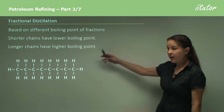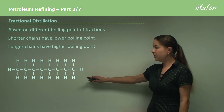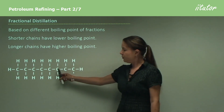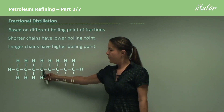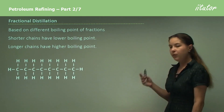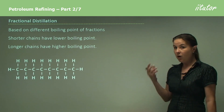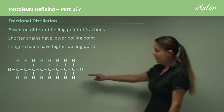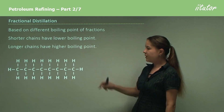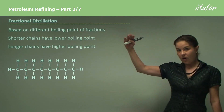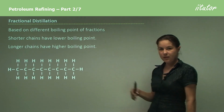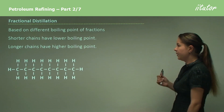Longer chains, such as this one, which is octane — eight carbons — therefore the prefix is oct, it's an alkane, so it's octane. Longer chains have a higher boiling point, and you'll need to remember this for this section of the topic.